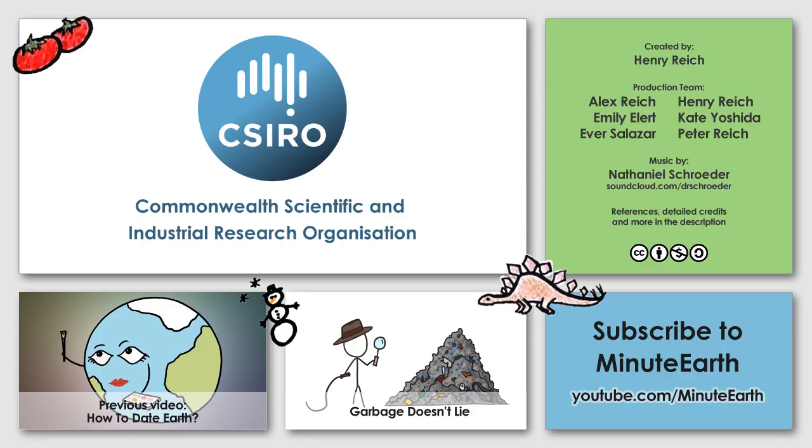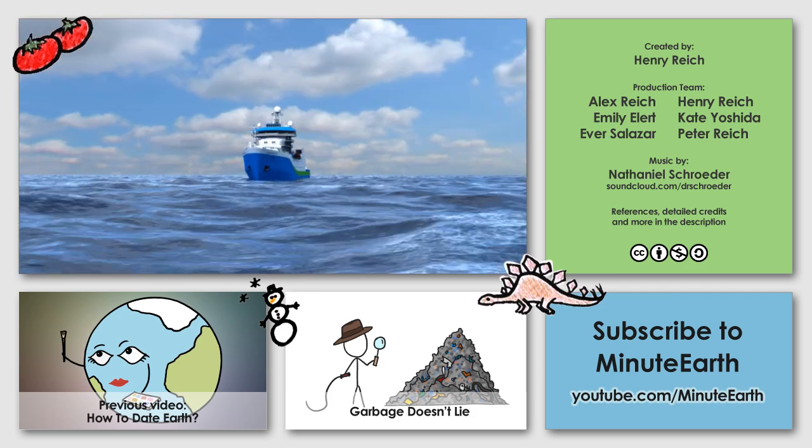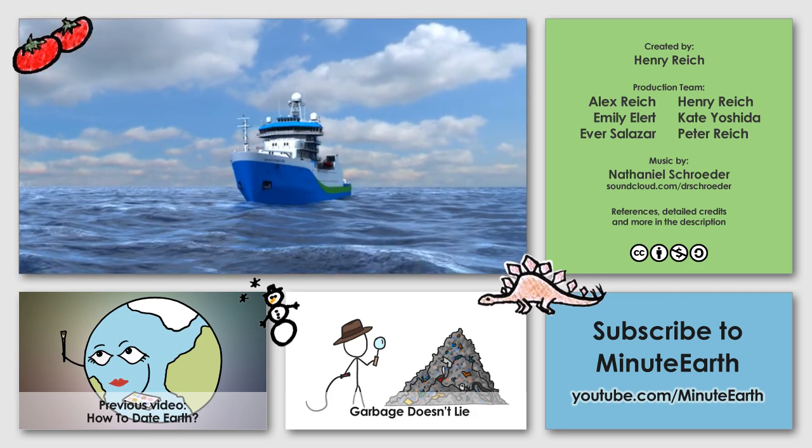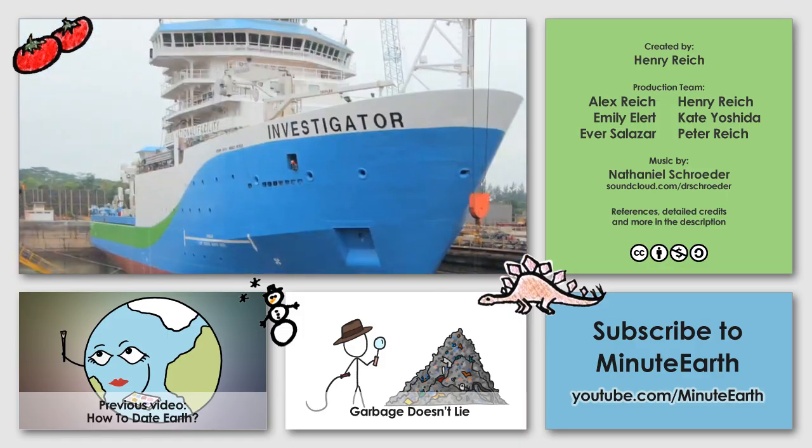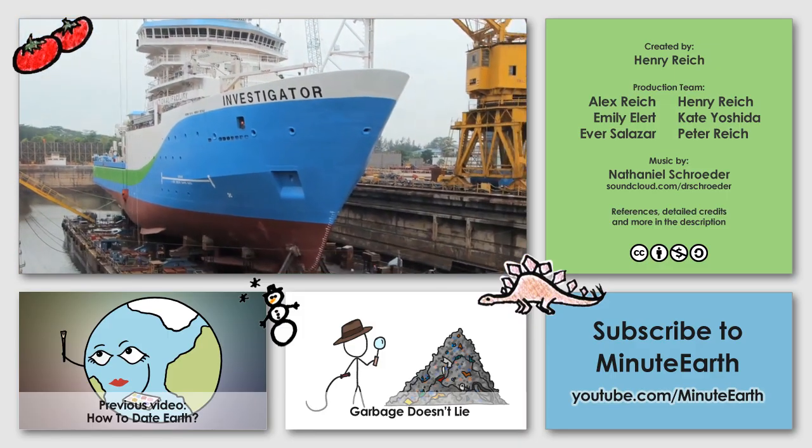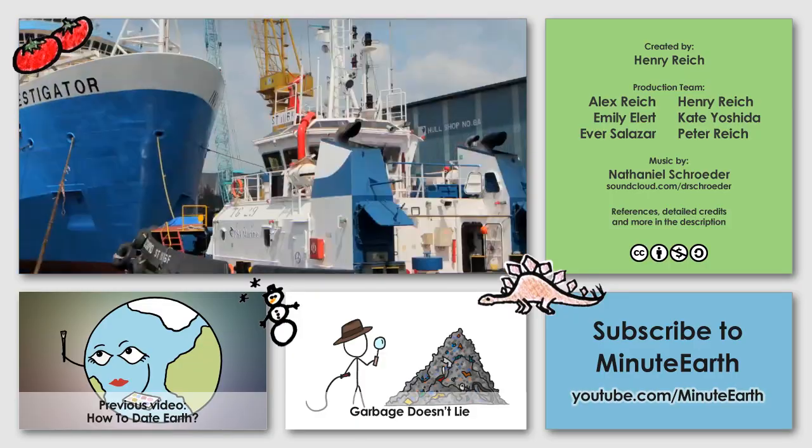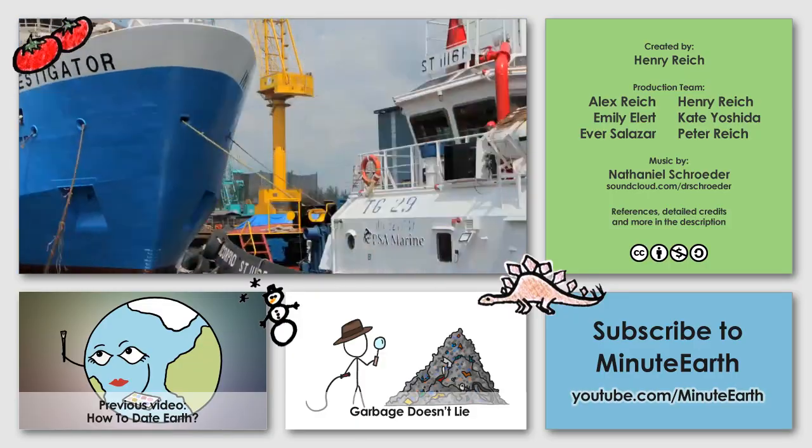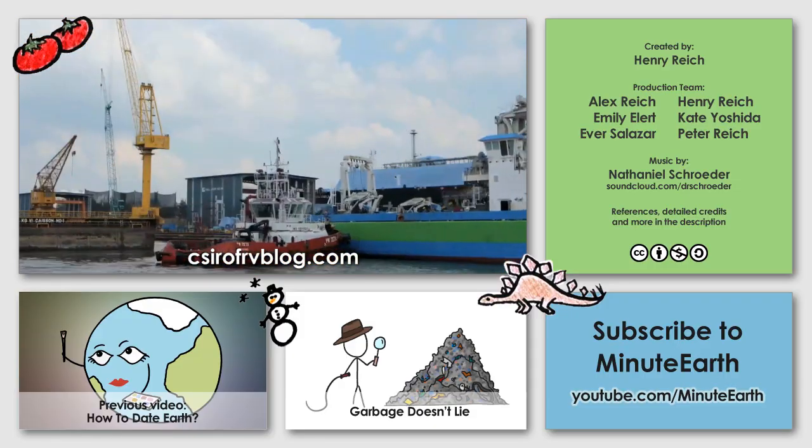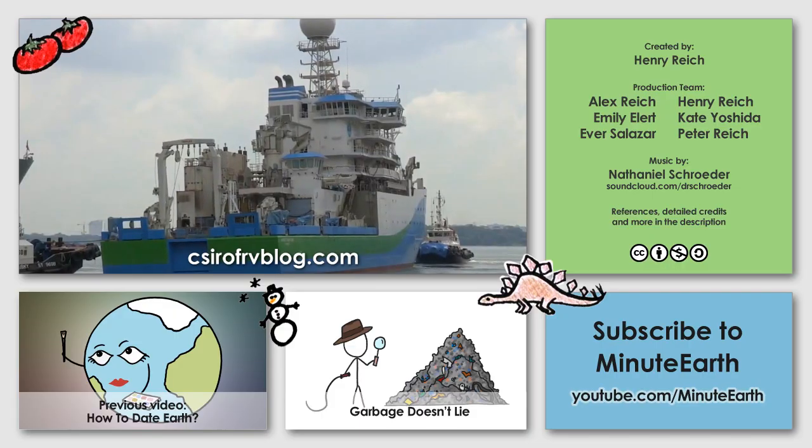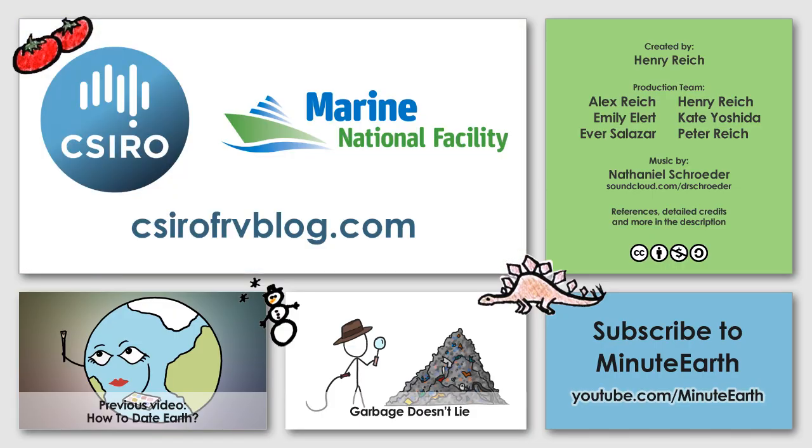This video was supported by CSIRO, which operates the Marine National Facility on behalf of Australia. CSIRO scientists will soon explore and study the oceans onboard the facility's purpose-built 94-meter RV Investigator, which will operate from the tropics to the Antarctic ice edge and will be one of the world's quietest research vessels. Investigator will enable Australia's oceanographers, biologists, geoscientists, atmospheric scientists, and their international collaborators to research and investigate the present and future of our oceans. Thanks again to CSIRO for supporting MinuteEarth.